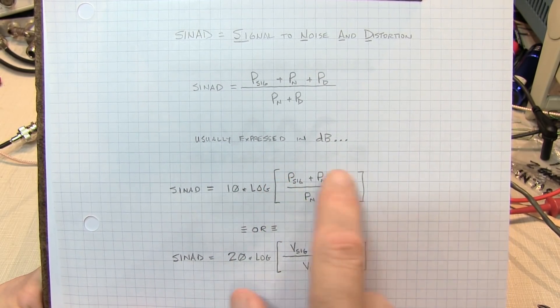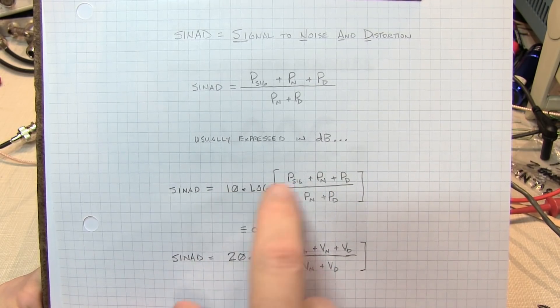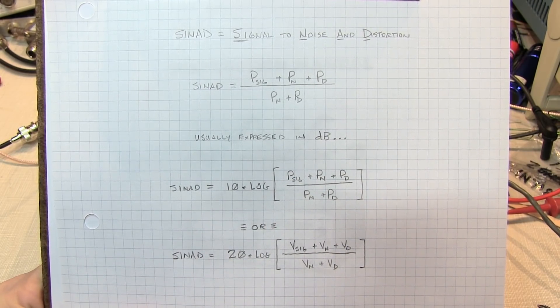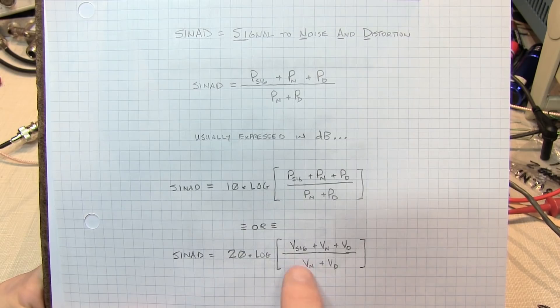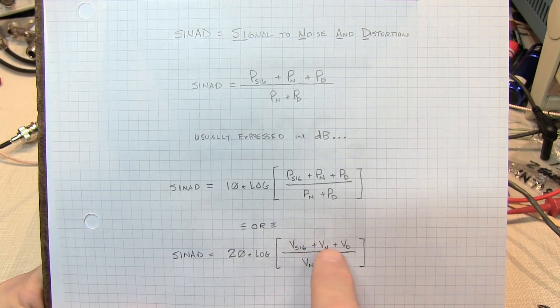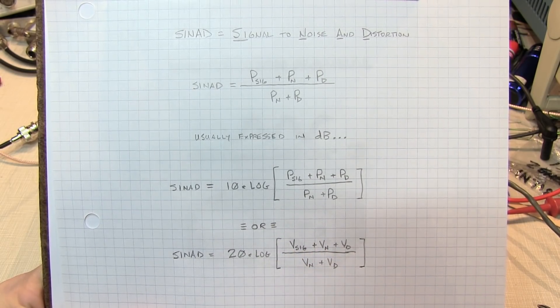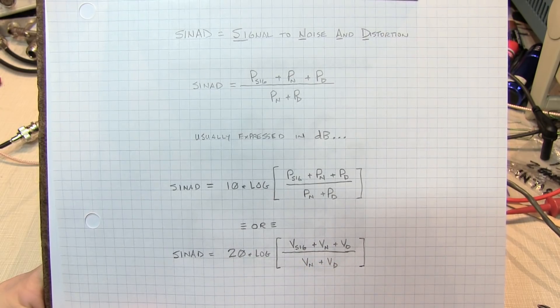So if you're dealing with measurement of power of these quantities, it's ten times the log of that ratio, or more often if you're measuring voltage, it's the voltage in the signal, the noise and the distortion divided by just the noise and distortion components.